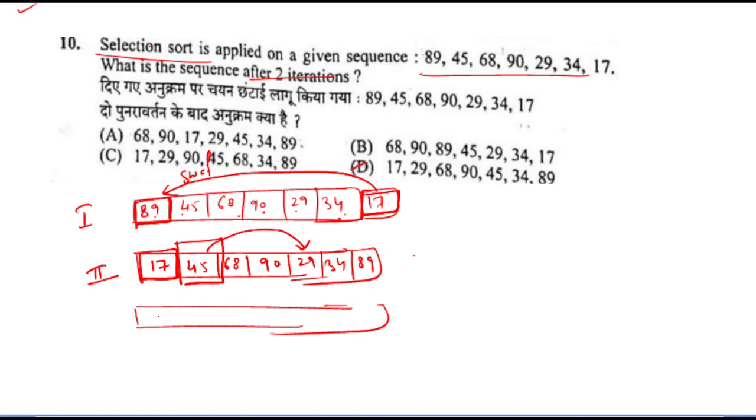After swapping: 17, in this position the element is 29, then 68, 90, 45, 34, and 89. After the second iteration, what sequence will be made? This one.